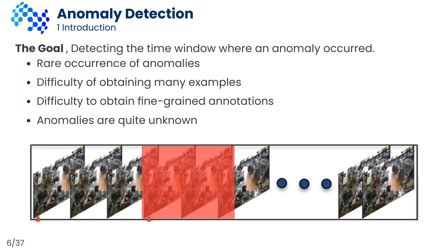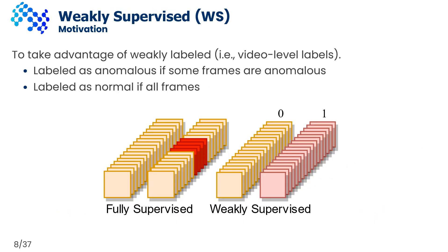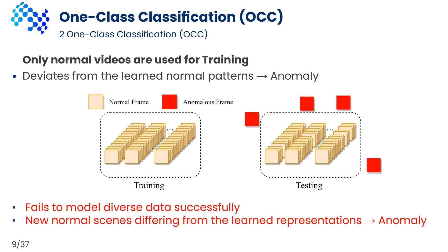The goal is to detect the time window where an anomaly has occurred. However, given the rare occurrences and short temporal nature of anomalous events in real-world scenarios, obtaining accurate fine-grained annotations is a laborious task. Several video anomaly detection methods have been proposed to leverage video-level labels and perform weakly supervised training to reduce annotation costs. However, since surveillance datasets are usually large-scale collections of videos, it is still cumbersome to obtain any kind of labels. Researchers have also widely explored one-class classification methods.